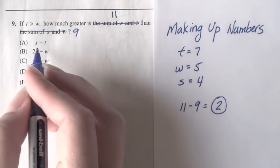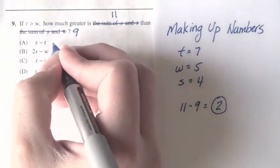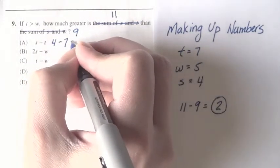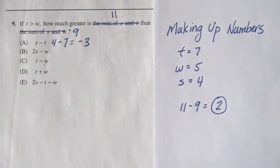Okay? So, let's look at a, s minus t. s minus t is 4 minus 7, which is negative 3, that's definitely not 2.